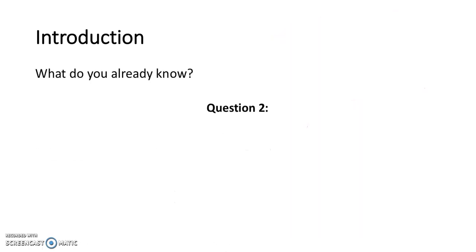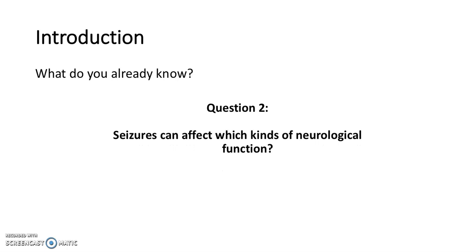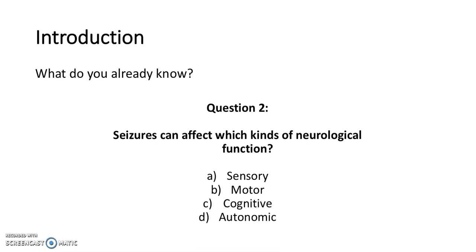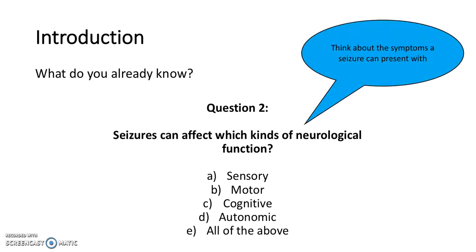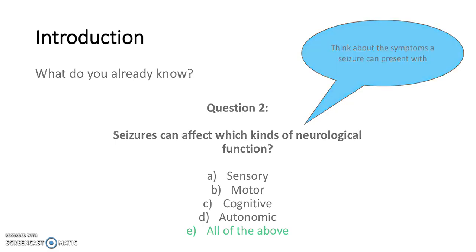Question 2: seizures can affect which kind of neurological function? Is that A) sensory, B) motor, C) cognitive, D) autonomic, or E) all of the above? Think about the symptoms a seizure can present with. The answer is E, all of the above, because the symptoms can come under any of those four areas.